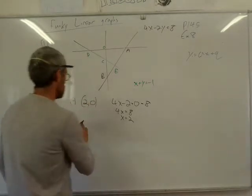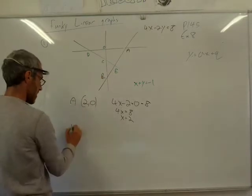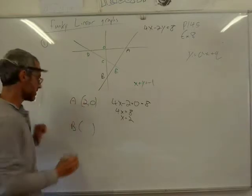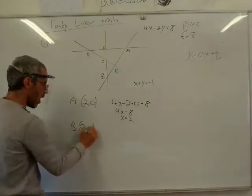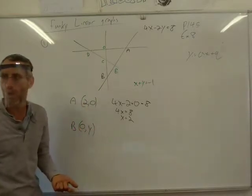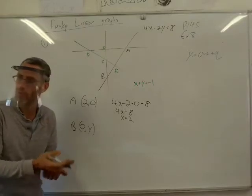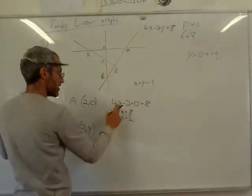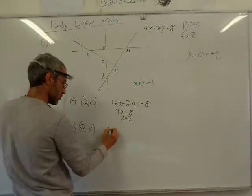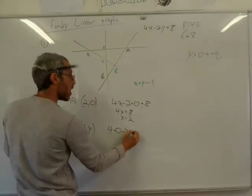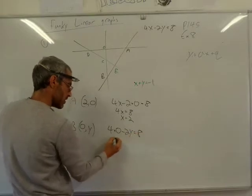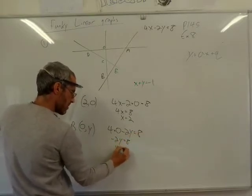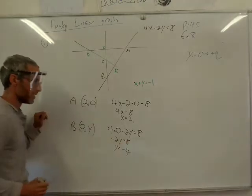For coordinate B, it's on the y-axis, so x is zero. The coordinate is (0, y). To find y, substitute x = 0: 4 times 0 minus 2y equals 8, so minus 2y = 8, giving y = minus 4 divided by minus 2.